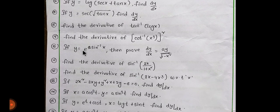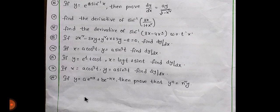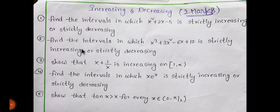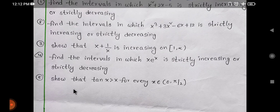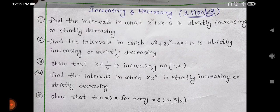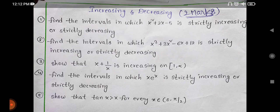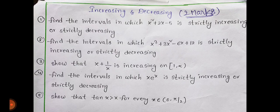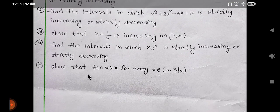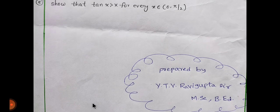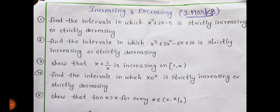In total we have 60 marks, increasing and decreasing. In total we have 40 marks and 60 marks. In total we have 70 marks - 60 to 70 marks. This is my name, prepared by YTV Raghupta, MSB - my qualification. Thank you very much. Keep watching this channel.